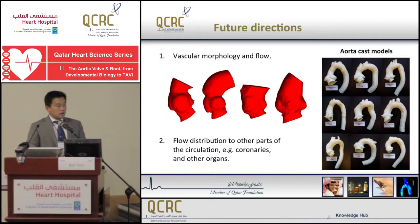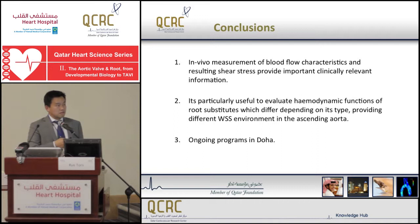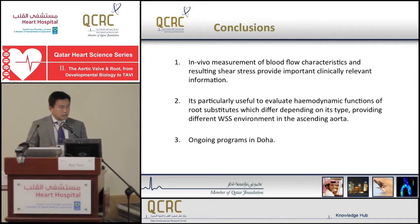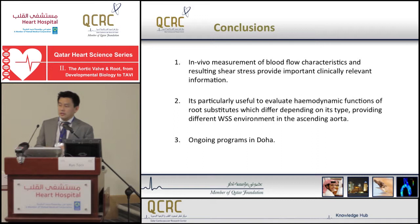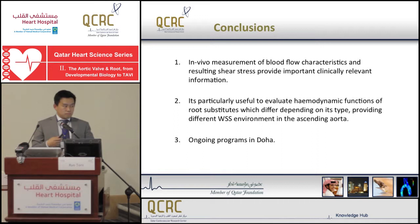As a conclusion, I would like to point out two things. First, in vivo measurement of blood flow characteristics and resulting shear stress provides important clinically relevant information. This is particularly useful to evaluate the hemodynamic function of root substitutes, which differ depending on their type, providing different shear stress environments in the ascending aorta. All these findings and accumulated expertise will be used in our collaborative project in Doha on bicuspid aortic valve research.